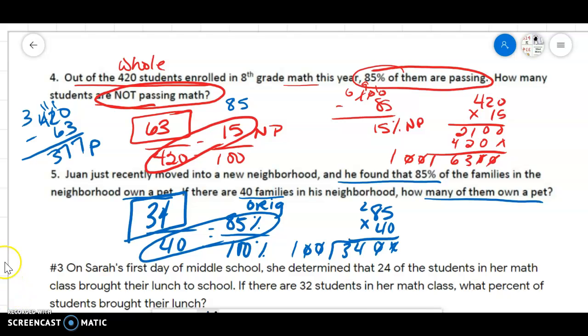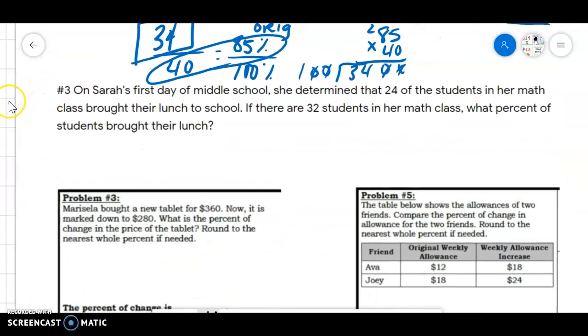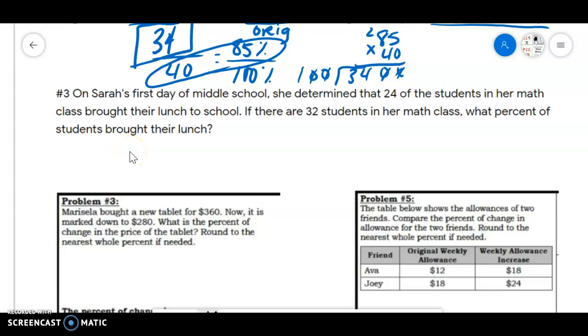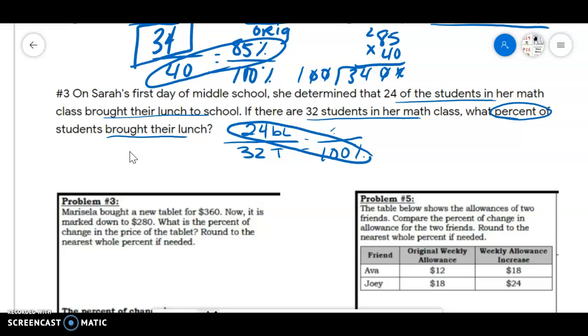On number three, on Sarah's first day of middle school, she determined 24 of the students in her math class brought their lunch. And there are 32 in her math class. What percent brought their lunch? So again, we have 24 who brought lunch out of 32 is our total equals 100% is our 32. So we're looking here.